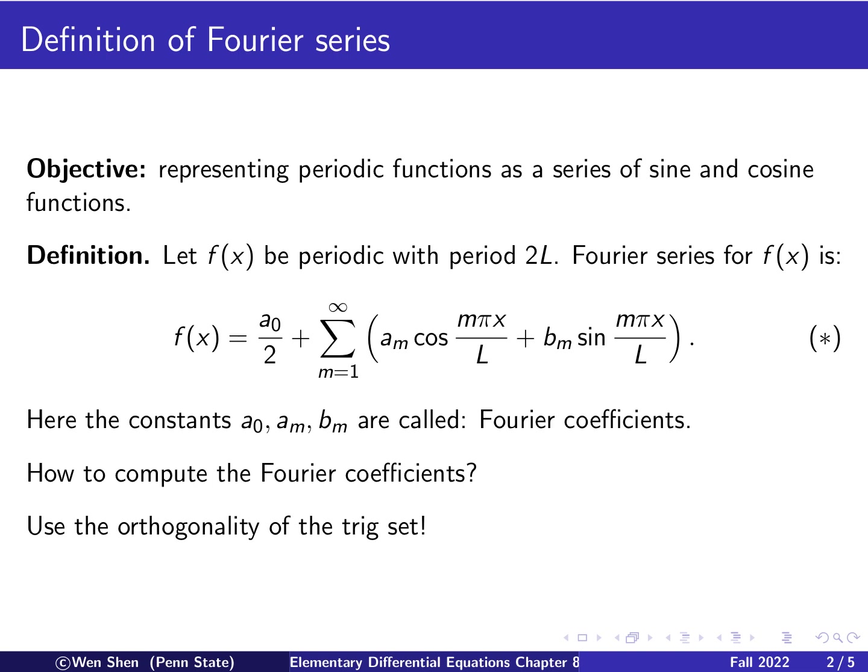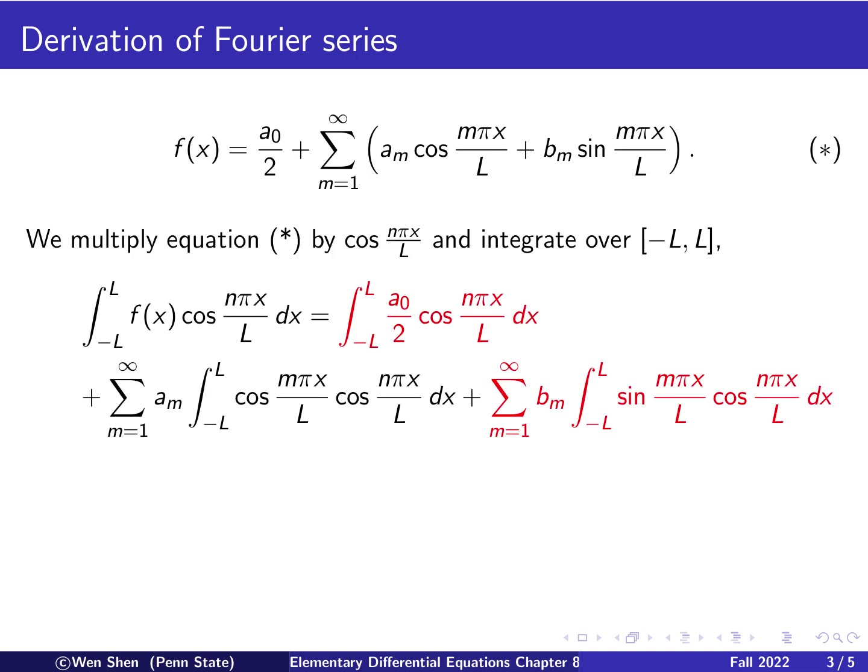Before we continue, I would like to emphasize on this special form of the constant term. The constant term is written as a0 over 2, so it's half of the coefficient a0. There are some textbooks that would call this constant itself as a0. Then that a0 will be different from our a0. Then our a0 divided by 2 will be the other a0. So just a side note.